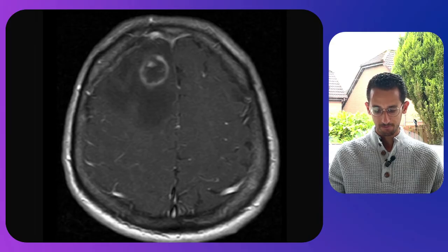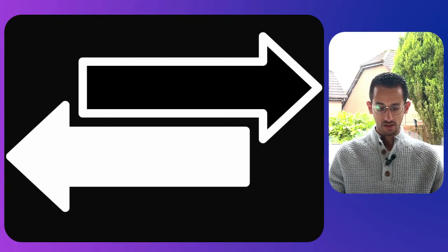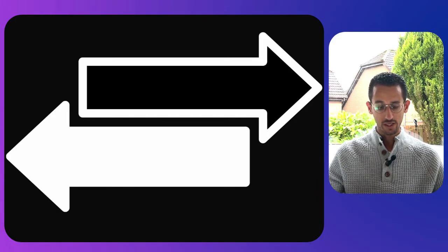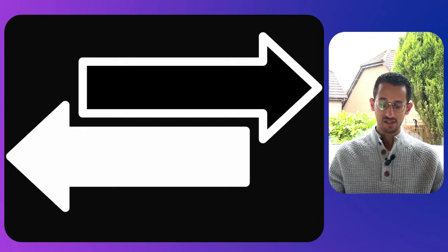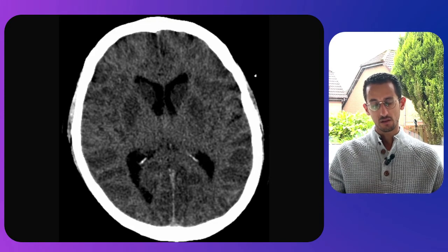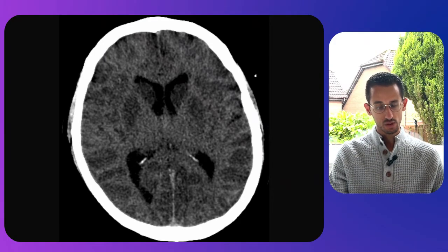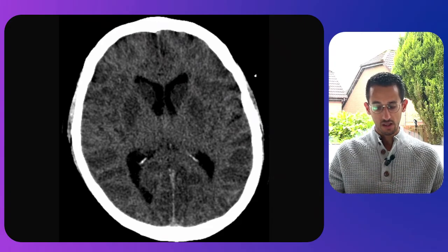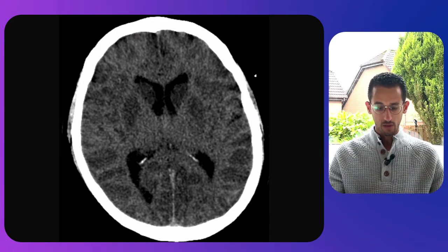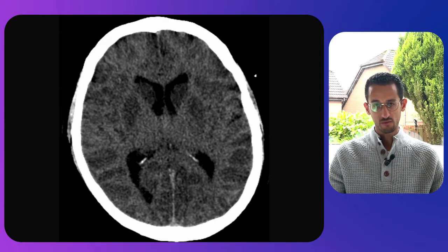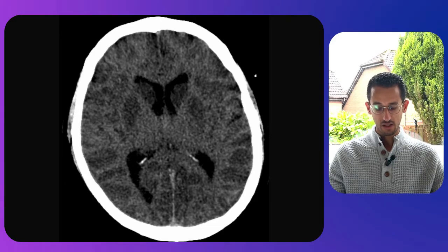The next is the reversal sign, where there is a reversal of attenuation between white and gray matter. On this CT scan you can see the inversion of attenuation — normally one is hyperdense and the other hypodense, but here the hyperdensity and hypodensity between white and gray matter are inverted. This happens when there is a diffuse injury to the brain.